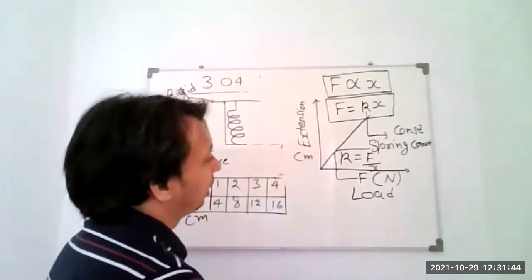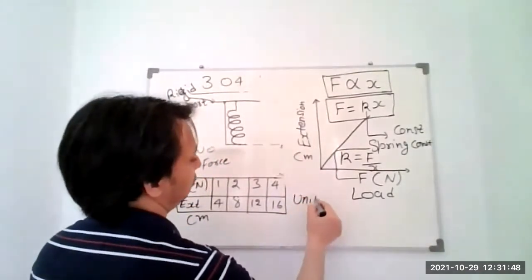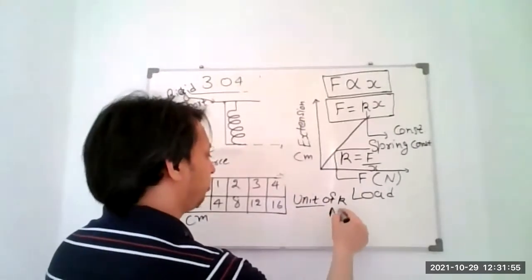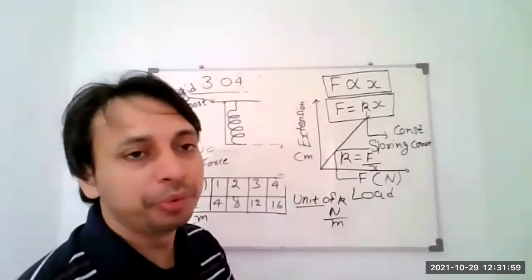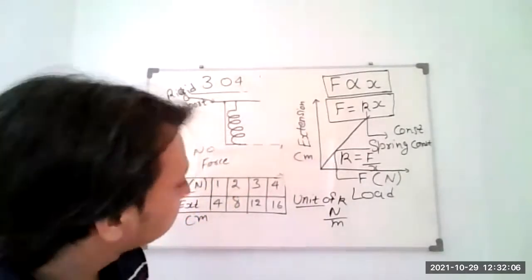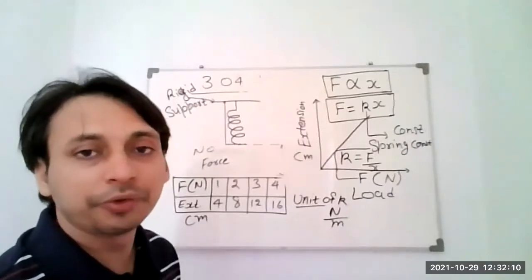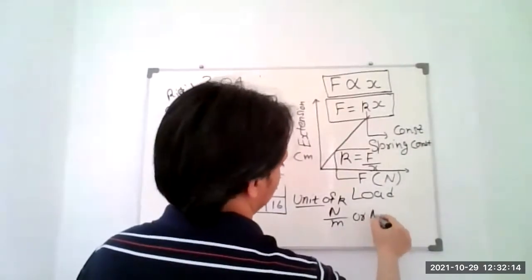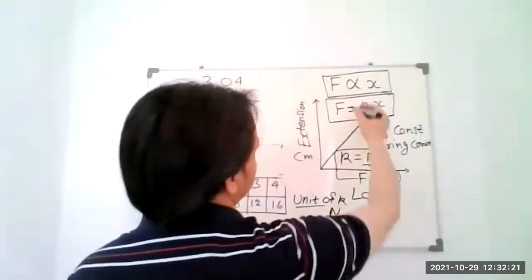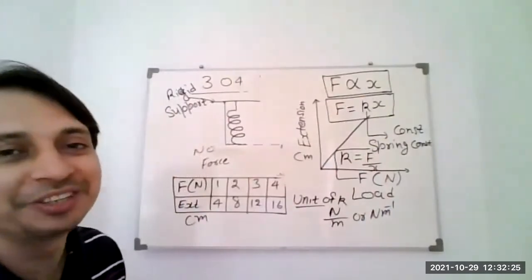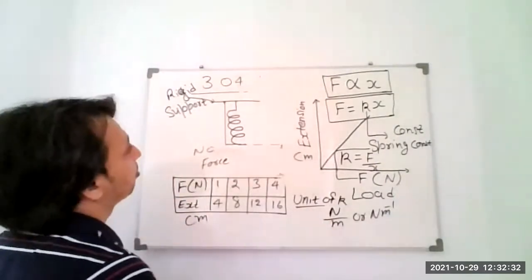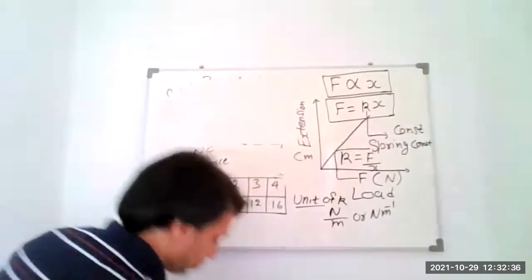This value of k is constant. The unit of k — remember, k is the spring constant — will be newton per metre, newton per centimetre, or newton per millimetre, depending on what length unit is given. In the SI system, the unit of k is newton per metre, or N·m⁻¹. Now this expression, F directly proportional to x, is called Hooke's Law — our heading and topic. F directly proportional to x is called Hooke's Law.